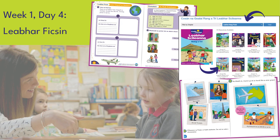Complete the skills book activity based on the reader to consolidate learning. For example, on page 38, the children are asked to name two countries mentioned in the reader and write two facts they have learned about these countries. They can then draw a picture to represent what they have learned. Don't forget to give the children time for free exploration of the reader.